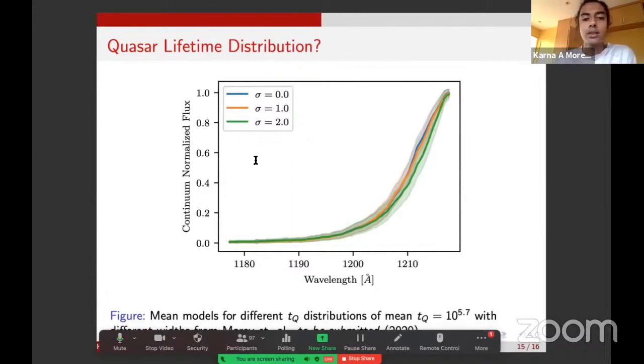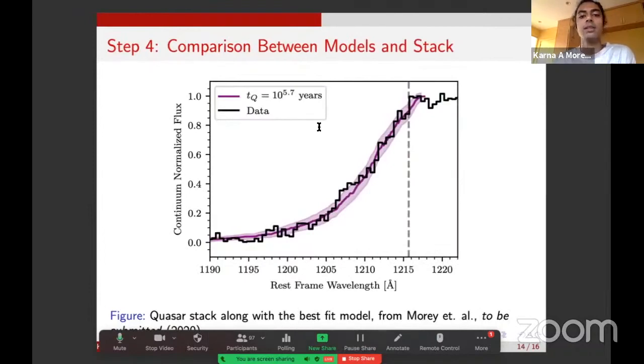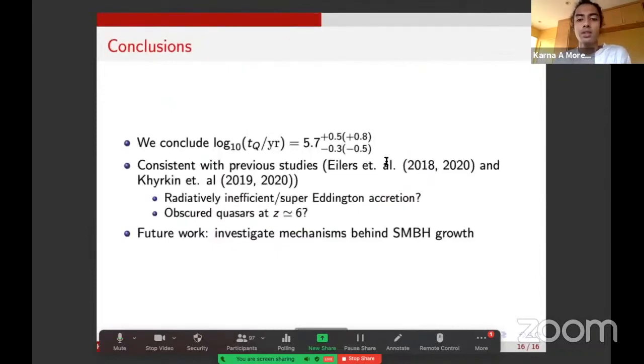In conclusion, we conclude that the effective lifetime of these quasars at redshift 6 is 10 to the 5.7, which is very consistent with previous studies done by Christina and Elia Kurgan. This is more than a magnitude shorter than what was previously understood. Recall at the beginning of the talk, I said about 10 to the 9 years, or 10 to the 8 years. This suggests that there's possibly a radiatively inefficient, aka super Eddington, accretion in these high redshift quasars, or a significant population of obscured, UV obscured quasars at redshift 6. For future work, we want to investigate these mechanisms and actually understand exactly what is the discrepancy. Thank you very much for listening, and I'll be happy to take any questions.